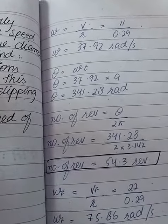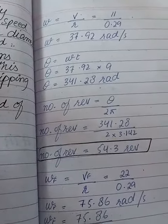Now theta equals omega times t. Omega times t gives 341.28 radians.